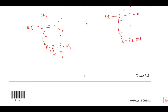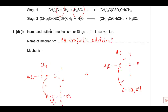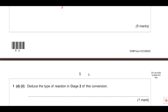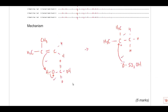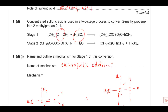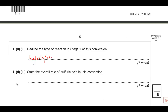Stage 2 involves adding water to the intermediate to form two products, which is an example of a hydrolysis reaction. Looking at the overall role of sulfuric acid: it starts as a reactant in stage 1 and is regenerated at the end, so overall it remains unchanged - therefore it is a catalyst. That's 16 marks - 16% of the paper in question 1 alone.